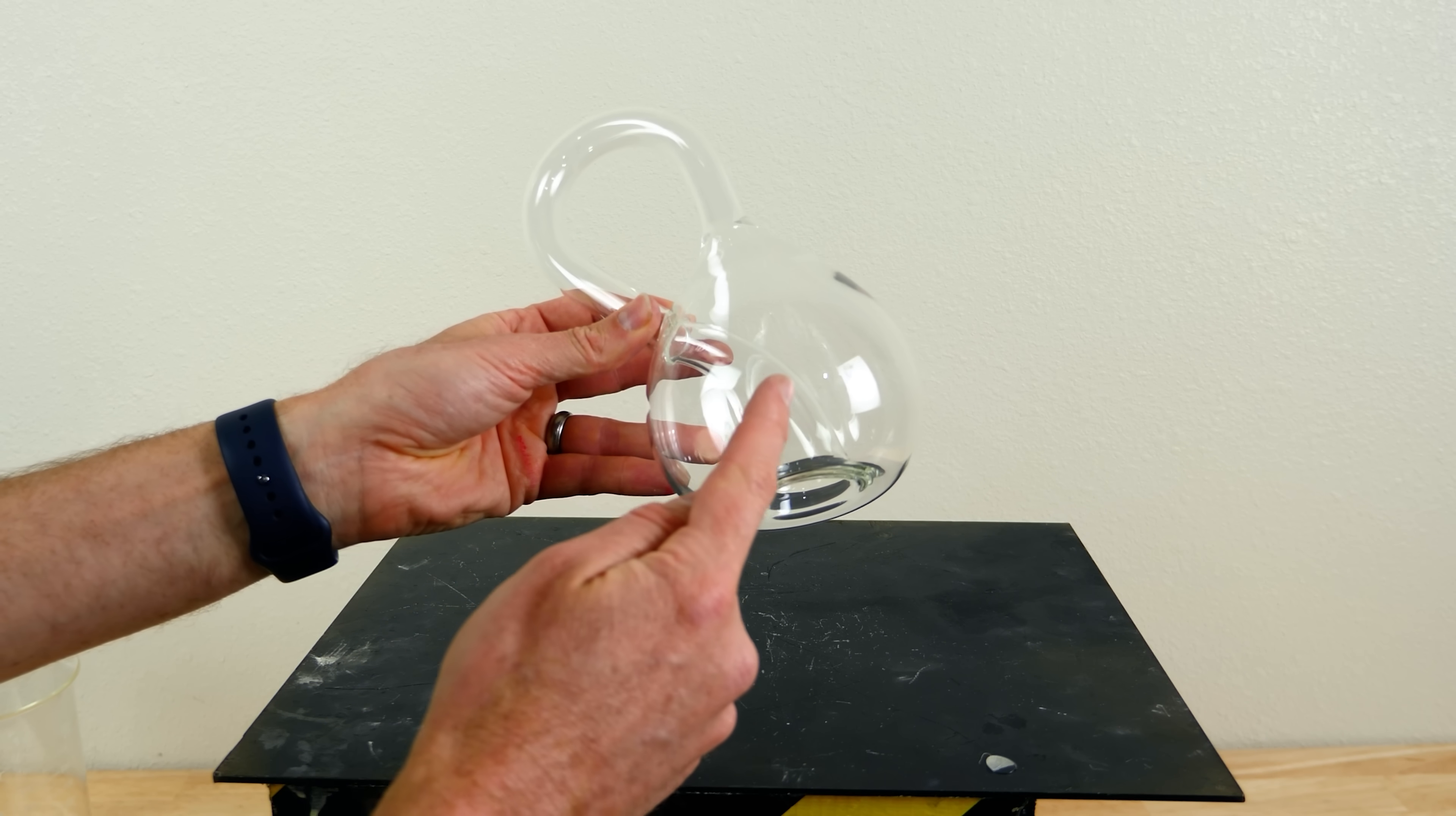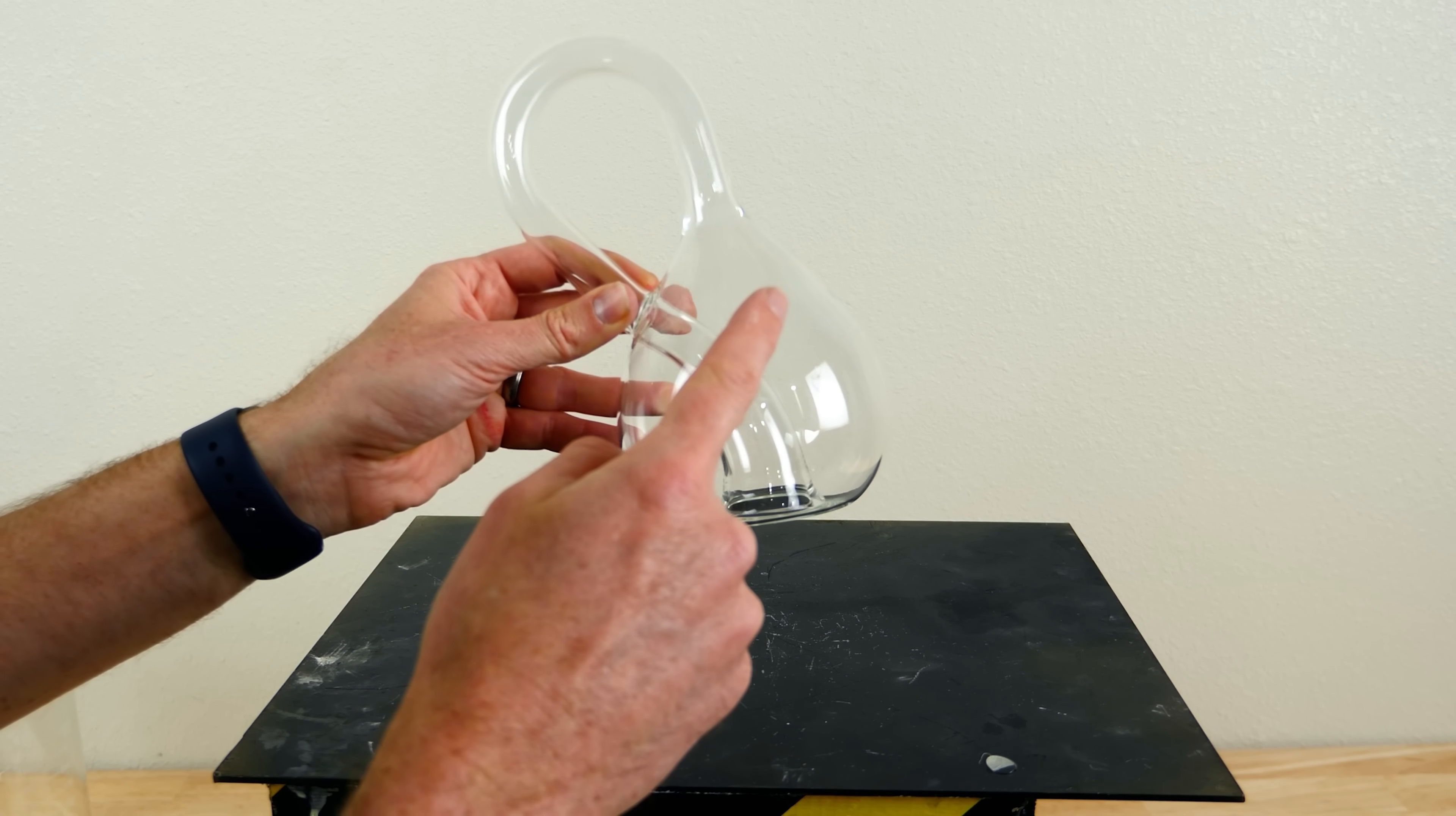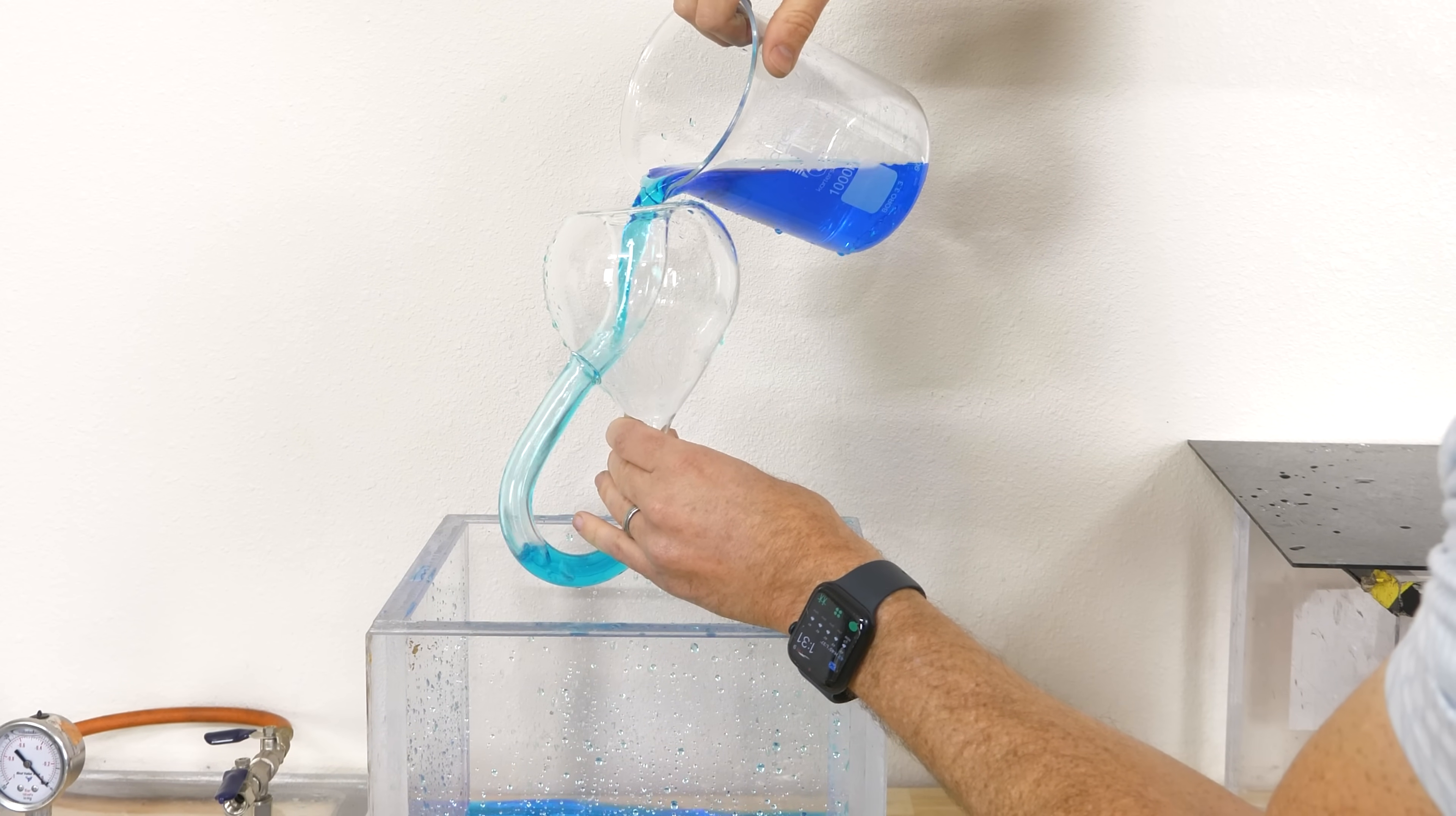You can see that if you follow an edge, the outside becomes the inside. According to topology, the Klein bottle has no volume. But if it has no volume, then what if we try to fill it with water?